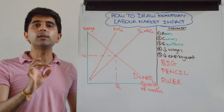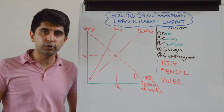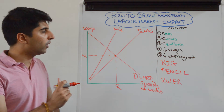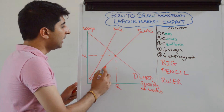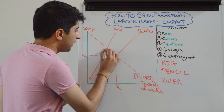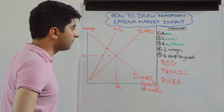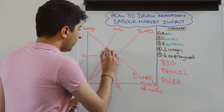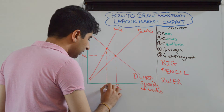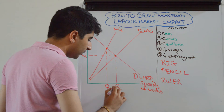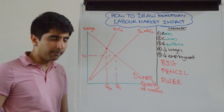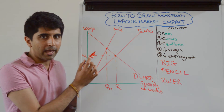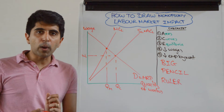Now put on your monopsony outcomes. The monopsonist will employ workers up until where MRP is equal to the marginal cost of labor, maximizing the profit brought by their workers. Where MRP equals the marginal cost of labor gives us our quantity QM — label that QM.